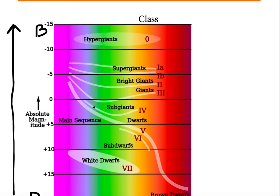On this HR diagram, we have various different classes of objects. We have Roman numeral VII for white dwarfs, Roman numeral VI for sub-dwarfs, Roman numeral V for main sequence stars, Roman numeral IV for sub-giants, Roman numeral III for giants, Roman numeral II for bright giants, Roman numerals Ib and Ia for supergiants, and at the very top, class zero, which are your hypergiants.